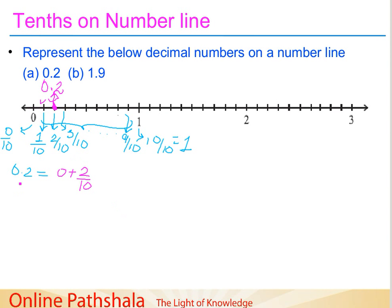Let's take one more example of 1.9. That means this number is greater than 1, and it is 9 parts out of 10 from 1. So, between 1 and 2, if the space is divided into 10 equal parts, 1.9 is at the ninth part.